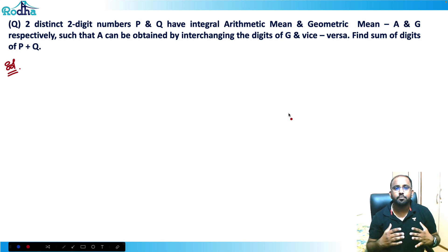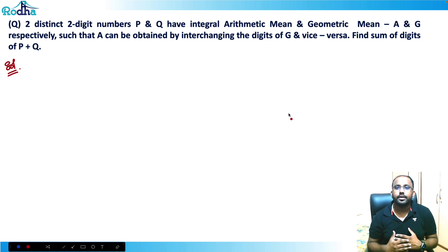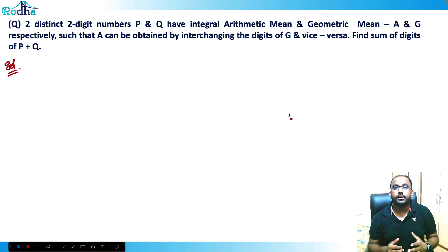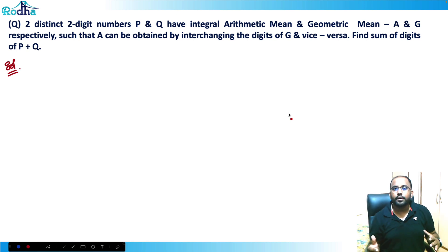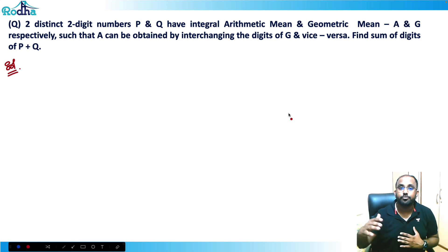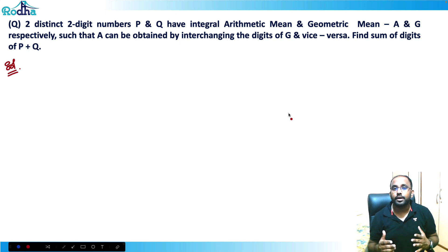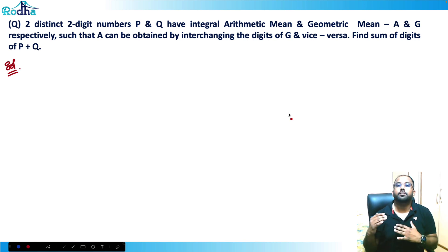What happens is that suddenly people are preparing nicely, they give a couple of mocks, and suddenly they get a very low percentile — 40 or 50 percentile — and they feel shocked. The thing is that we have to do some good quality questions to increase our thinking level. We cannot prepare only on basic models and then go give mocks. We have to prepare deeply.